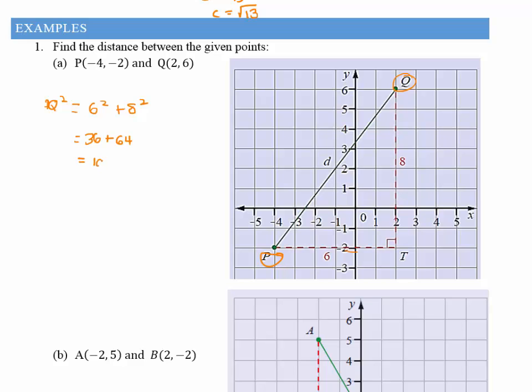And so to find PQ by itself, I'm just going to take the square root of a hundred, which gives me the answer of ten. I'm just going to say units because I really don't know what measurement this is in.